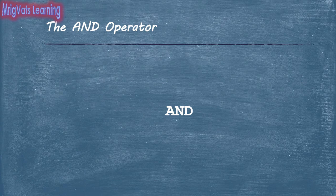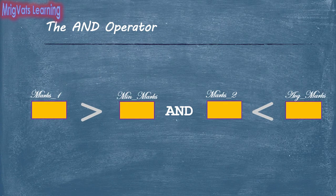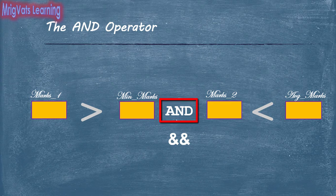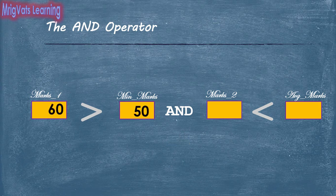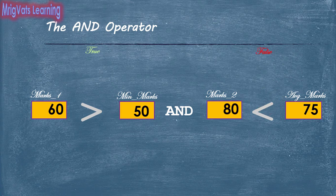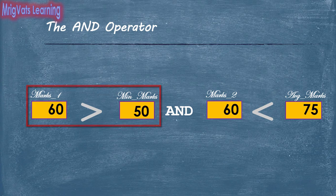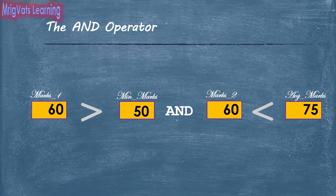AND is one of the logical operators supported across programming languages. It is used with different notations such as double ampersand in C++ and Java, as AND in Python and SQL, and hyphen A in shell script, but the basic functionality remains the same. When you use the AND operator, its output is true only when both operands evaluate to true. Even if one operand evaluates to false, the output is false. The left-hand side operand is evaluated first, and the right-hand side operand is evaluated only if the left-hand side operand evaluates to true; otherwise the operator gives false as output.